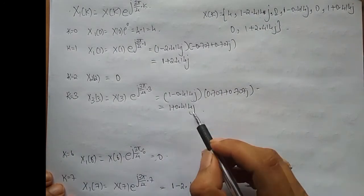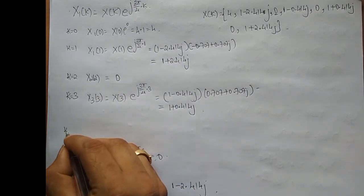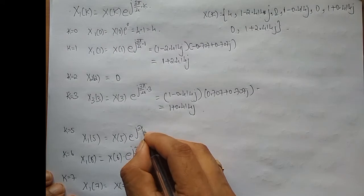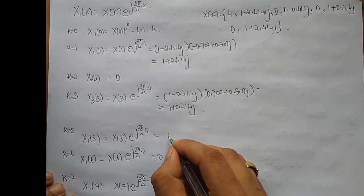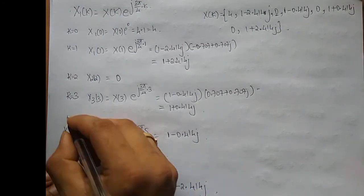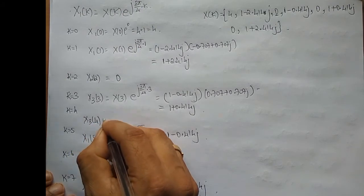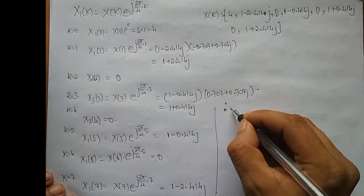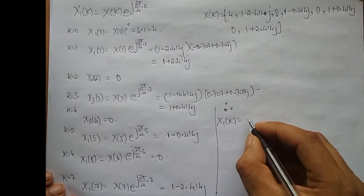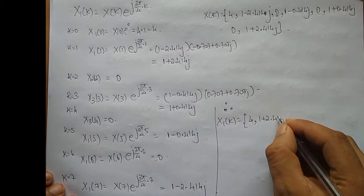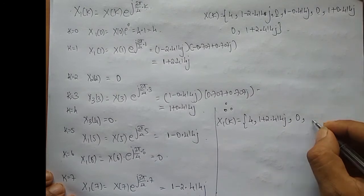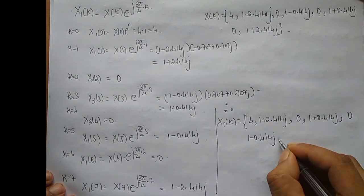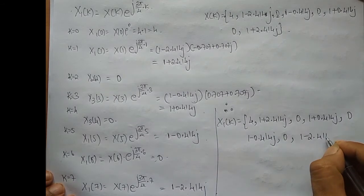If X1[3] = 1 + 0.414j, then for k = 5, X1[5] = X[5] · e^(j3π/4·5), which is the complex conjugate, giving 1 - 0.414j. For k = 4: X1[4] = 0, because X[4] = 0. Therefore, X1[k] = {4, (1+2.414j), 0, (1+0.414j), 0, (1-0.414j), 0, (1-2.414j)}.